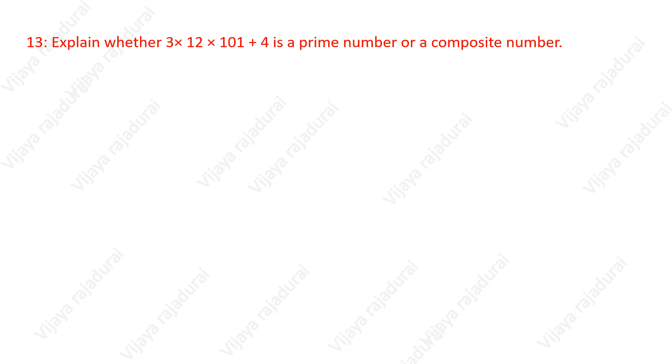Explain whether 3×12×101+4 is a prime number or a composite number. First, we'll see what is a prime number and what is a composite number.